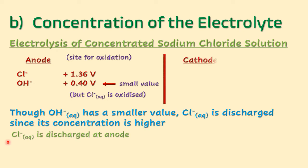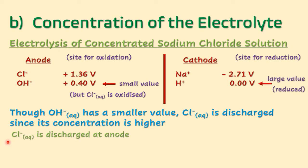At the cathode — remembering that cathode is a site for reduction — we have sodium ions and hydrogen ions. The larger value represents the stronger oxidizing agent, and a strong oxidizing agent is most easily reduced. Applying the concept from the anode, we could have said sodium ions are preferentially discharged because of their high concentration. However, this does not occur because the potential between sodium ions and hydrogen ions is too high. Therefore, hydrogen ions are discharged rather than sodium ions at the cathode.